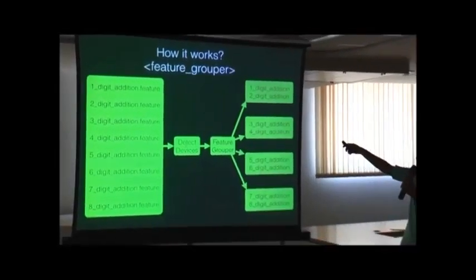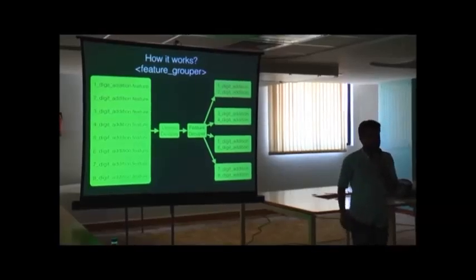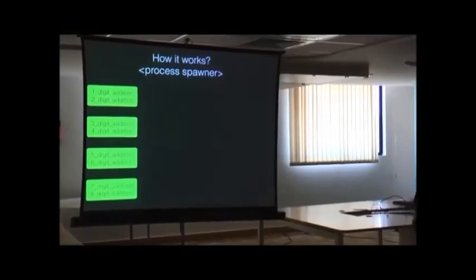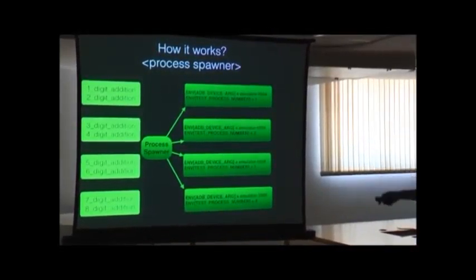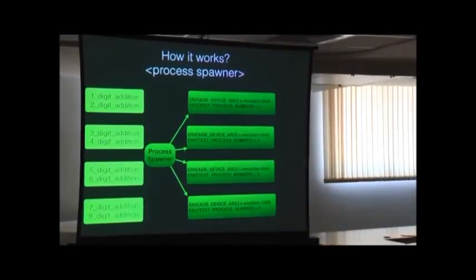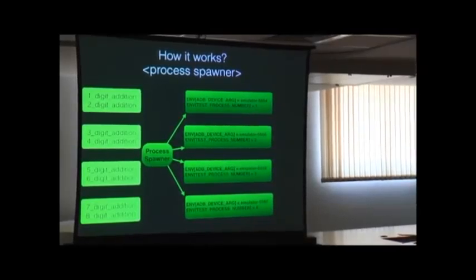So here's how it works. First I detect how many feature files are in my features folder, then I detect how many devices are connected to my computer. Let's say I have four devices connected — I divide and group all features into four equal groups. So eight feature files get grouped: files one and two go in the first group, three and four in the second group, and so on. Once I have feature groups ready, there is a process spawner module which spawns a number of processes equal to the number of groups. Each process gets its own execution environment — for example the first process gets ADB_DEVICE_SERIAL set to the first device argument, and so on. That's how each process knows which device to talk to.